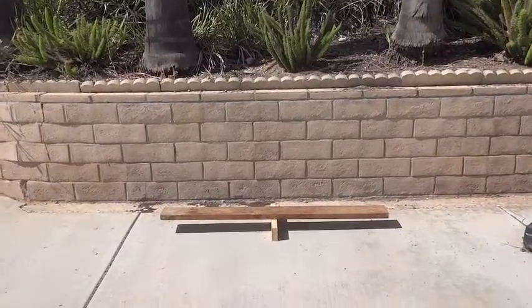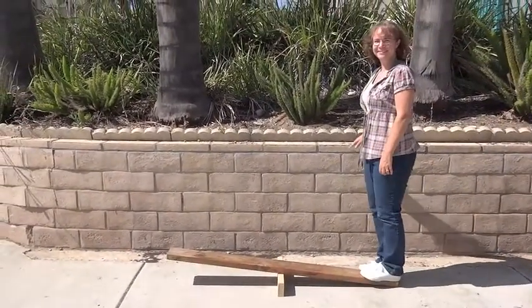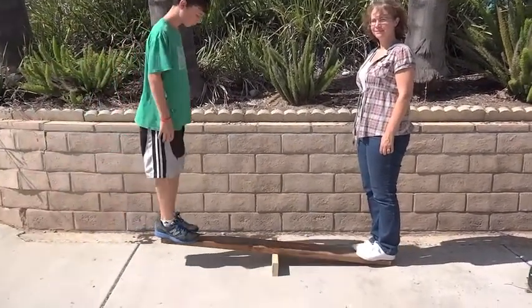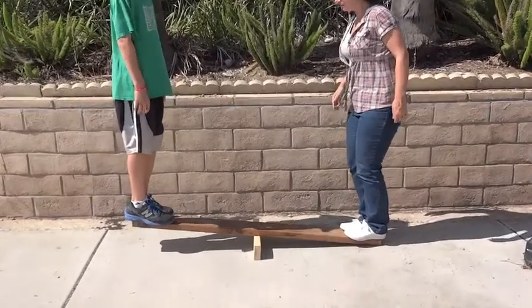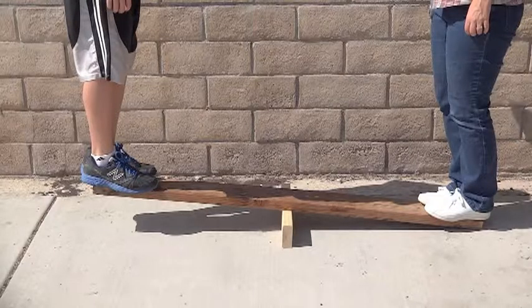Here I have a seesaw and we're going to pick two people of different weight, one on this side and the other one on this side. Now notice it's not balanced, it was balanced before, it doesn't matter if you jump up and down. How would you balance this?